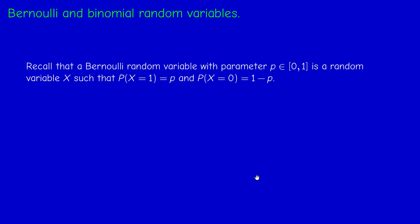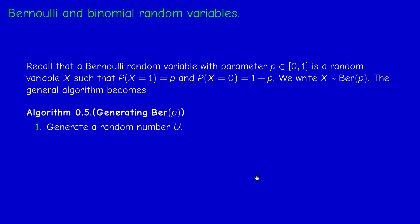Next, we specialize to Bernoulli and binomial random variables. A Bernoulli random variable with parameter p is a random variable which is a success with probability p and a failure with probability 1 minus p. The general algorithm is very easy to implement in this case: just divide the interval (0,1) into two parts, (0,p) and (p,1). Generate a random number u; if it is less than or equal to p, set x equal to 1, otherwise set x equal to 0. No loop is needed.